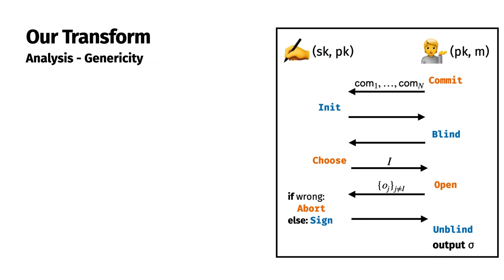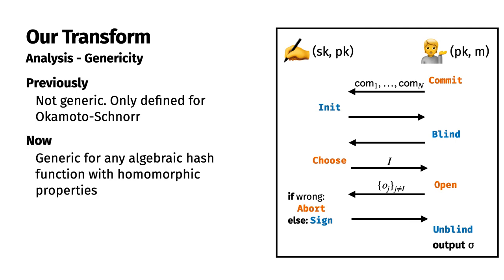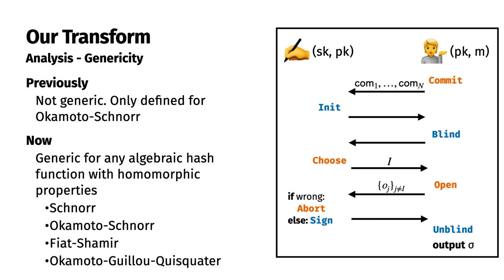Finally, we compare genericity. As mentioned before, Poincheval's transform was only defined in terms of the Okamoto-Schnorr blind signature scheme. Our result, which builds on Poincheval's transform, also generalizes it to any blind signature scheme built on an algebraic hash function with certain homomorphic properties. We refer to these as linear function families in the paper. Examples of blind signature schemes built on top of a linear function family include Schnorr, Okamoto-Schnorr, Fiat-Shamir, and Okamoto-Giyu-Kiskate.